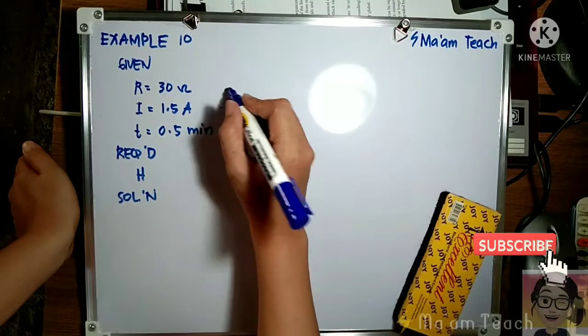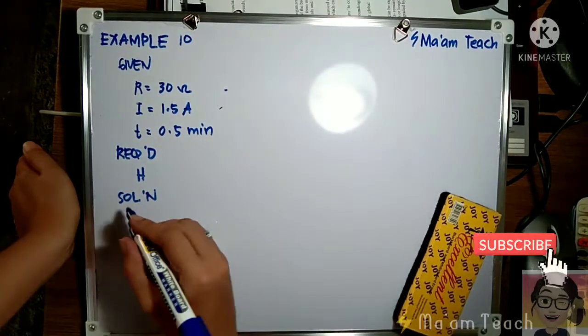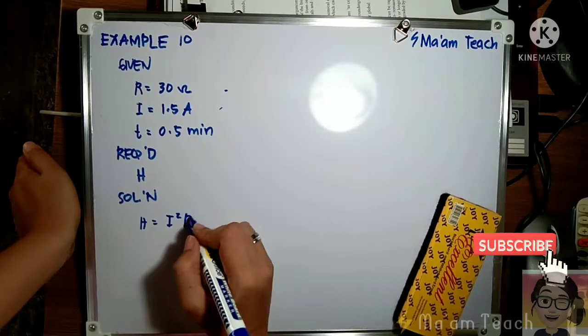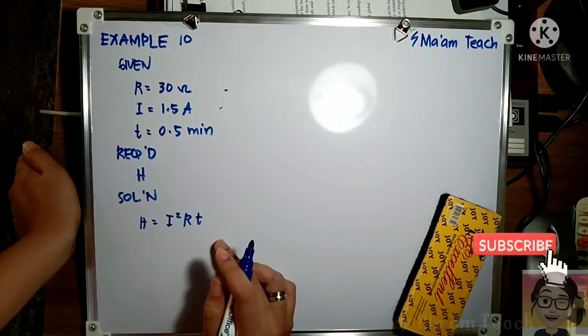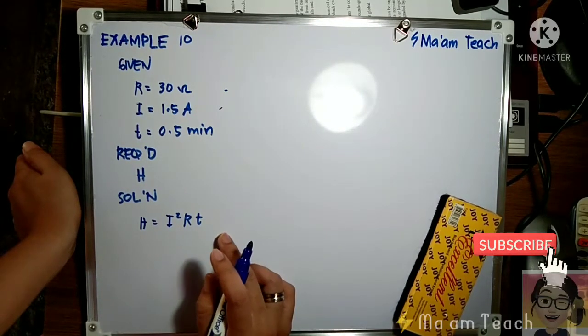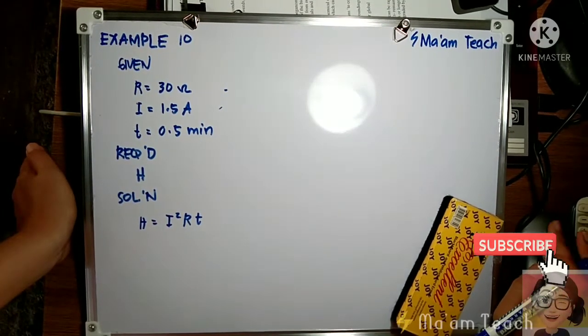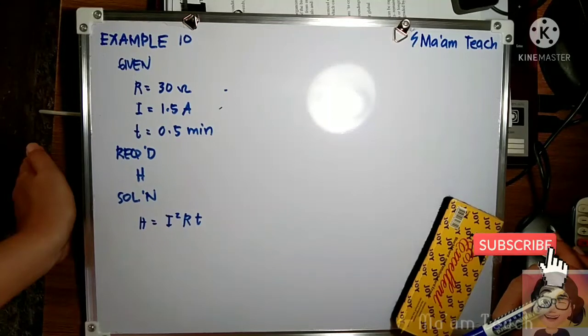Since you are given current, resistance, and time, we will be using H equals I squared R times time. In this problem we are not specifically asked to express it in a specific unit.